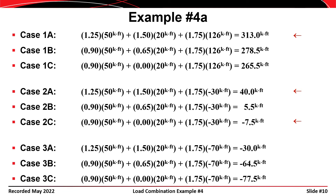For load case 3, the DC and DW moments are positive, but the live load plus impact is negative 70 kip-feet — a larger negative than in case 2. Working through the three permutations of dead load factors, only one case is critical: case 3C, with a moment of negative 77.5 kip-feet. The other two are not critical because all three results are negative and case 3C is the maximum negative.